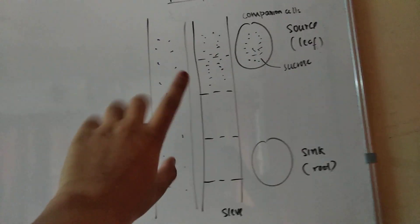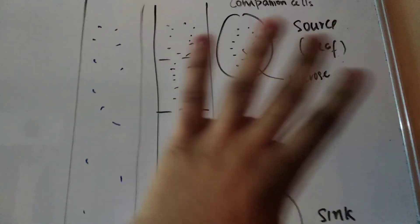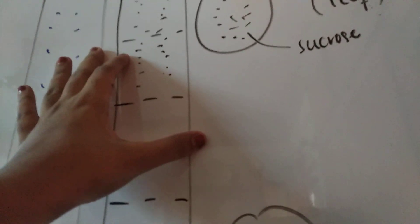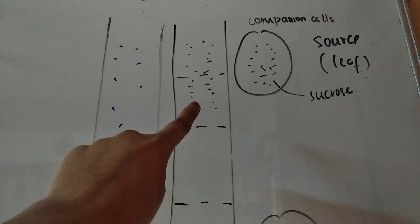Now I've shown you the sucrose within the source and the sucrose within the phloem. This single companion cell is not the only cell that is going to put sucrose into the phloem. There are lots of other cells around the phloem that are also putting sucrose into the phloem.